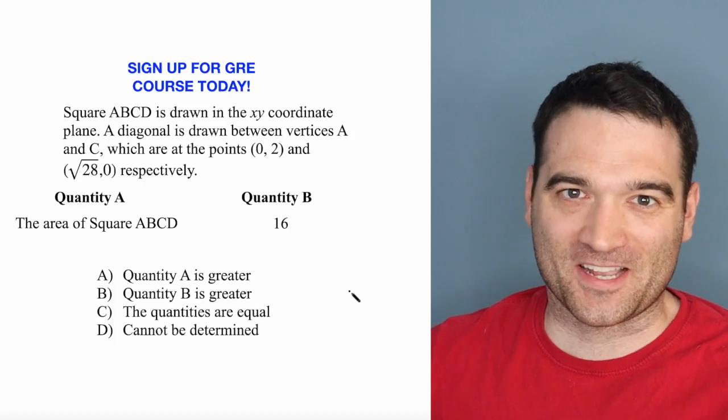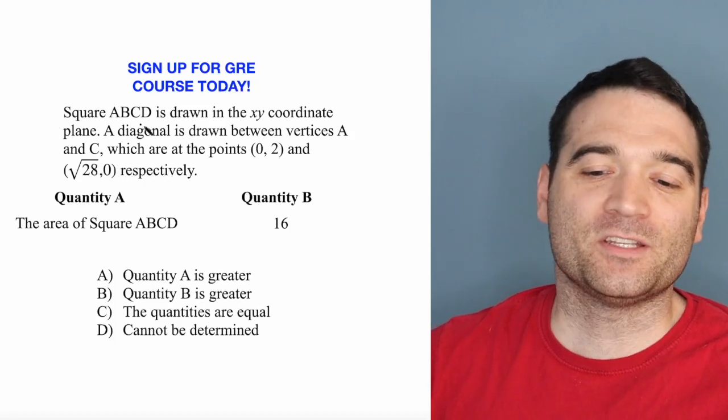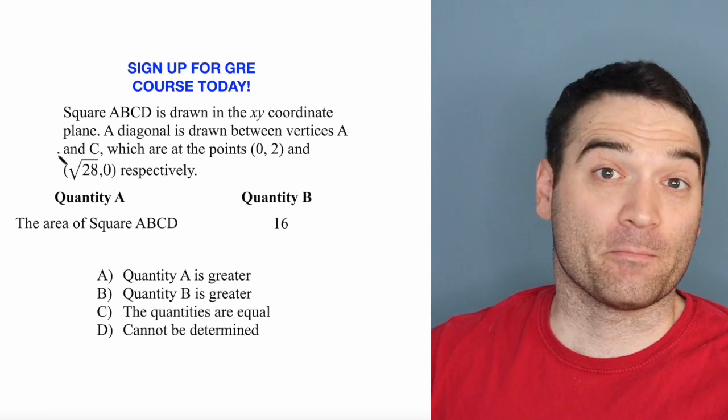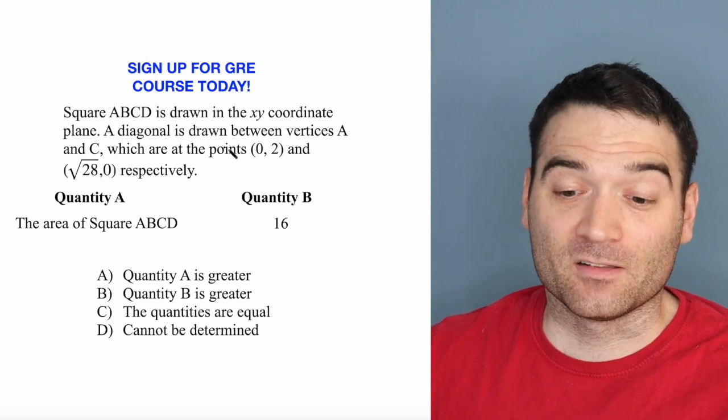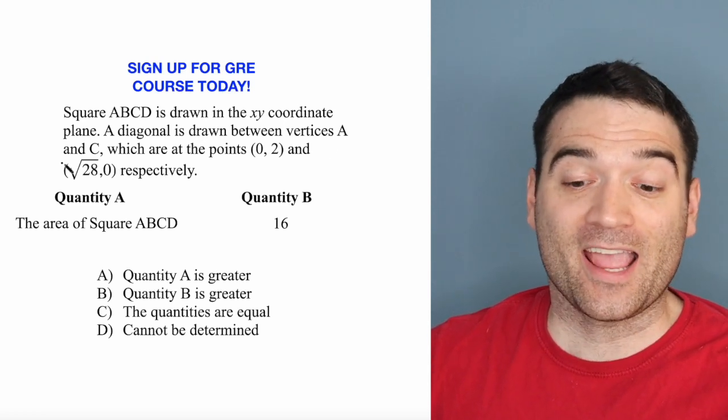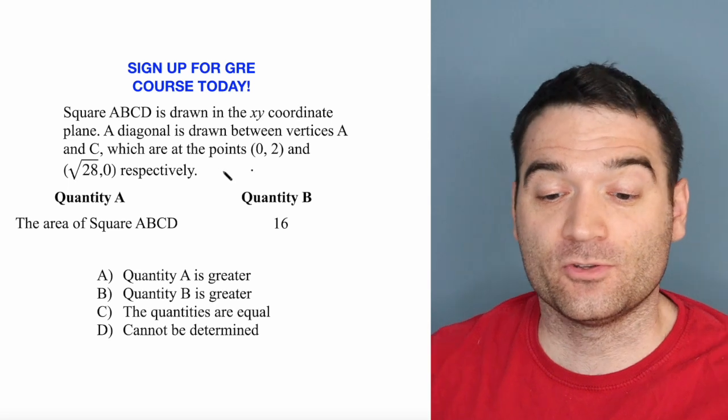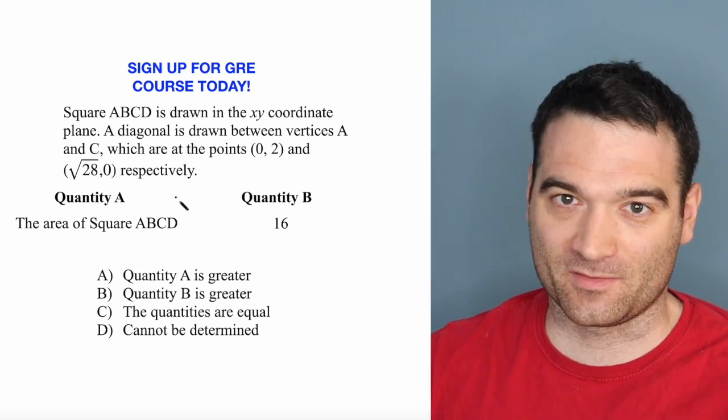Here's a GRE algebra question. Let's take a look. Square ABCD is drawn in the XY coordinate plane. A diagonal is drawn between the vertices A and C, which are at the points (0, 2) and (√28, 0) respectively.